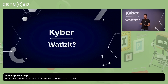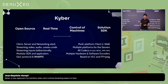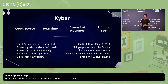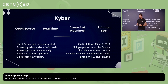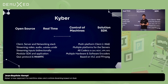So what is Kyber? Well, Kyber is basically that. It's an open source real-time SDK to control machines. It's a kind of next-generation Parsec, but open source. It's both a client, a server, and a networking stack. It can stream video, audio, subtitles, unidirectionally.